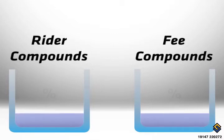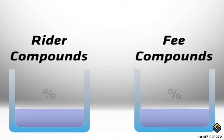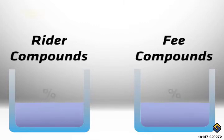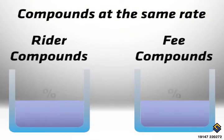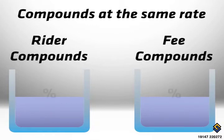Many fee structures calculate the fee based on the income rider guaranteed growth rate. As the rider's income account accumulates at the predetermined amount, so does the fee, regardless of the performance of the financial product.